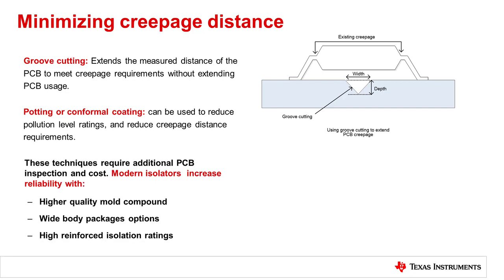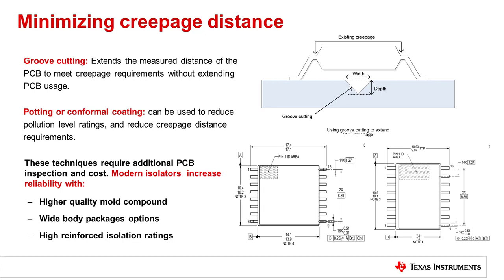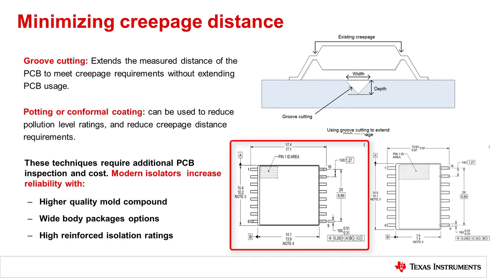One effective way to reduce creepage and clearance without conformal coating or potting is to select a wide-body isolator manufactured with high-quality mold compound. This image shows two identical isolators in two different packages. The wide-body package meets IEC creepage requirements of 14.5 mm, and because many new isolators use the higher-quality mold compound of material group 1, they enable high-altitude designs and tolerate higher pollution degrees without requiring additional steps in PCB manufacturing.